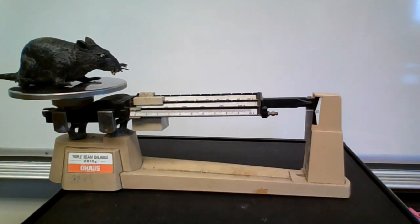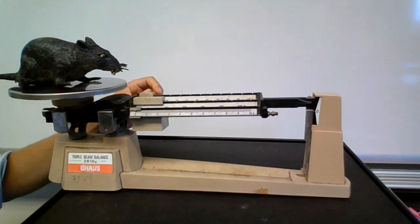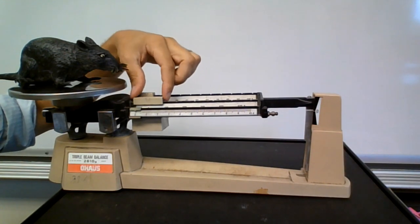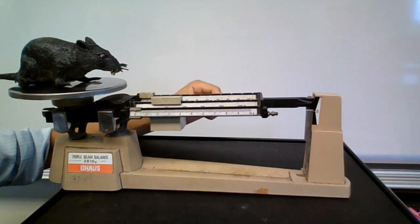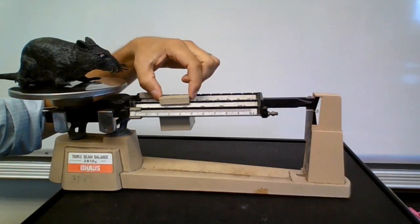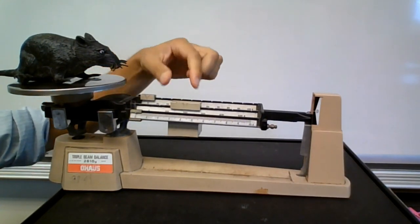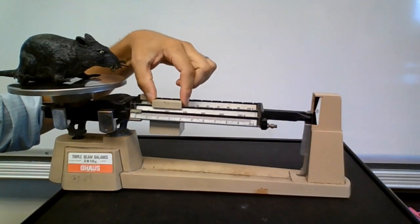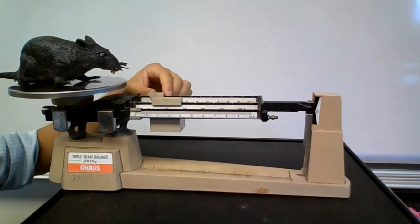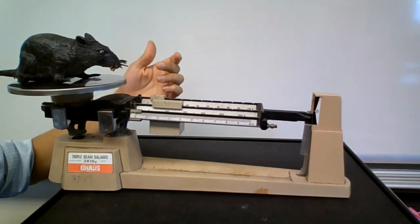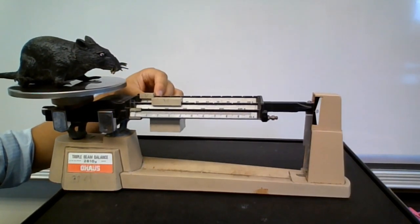Now we're going to move our riders, first starting with the hundreds. Once we move to 100, the rider is going to be in the notch and it's going to weigh more than 100. Now does it weigh more than 200? It doesn't. So we need to go back to 100. And let's move our tens. Let's move from 100 to 110. A little bit too much, so we know it's between those two numbers, 100 to 110. We're going to move our singles.